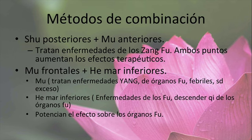Métodos de combinación: yo puedo combinar los dos, los Shu posteriores y los mu anteriores. Si yo tengo por ejemplo una enfermedad de pulmón, puedo combinar los dos porque tienen un sinergismo. El punto Mu y el punto Shu tienen un sinergismo favorecido por la teoría de las rutas del Chi. Puedo seleccionar el punto mu anterior de pulmón, que es Pulmón 1, y el punto Shu posterior, que es Vejiga 13. Ese es un método de combinación muy usado en la clínica.